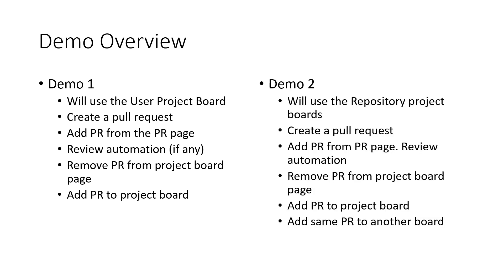For the second demo, we're going to make use of one of our repository project boards that has automation. We'll create a pull request there, add it from the pull request page, and see what automation triggers. Then we'll remove it from the board, add it directly from the board, and also add that same pull request to a second board — just to show you how you can have the same pull request on multiple boards.